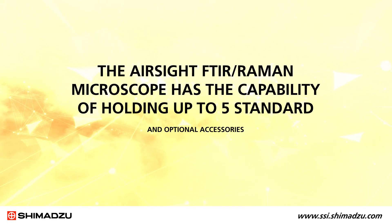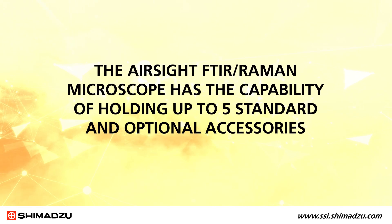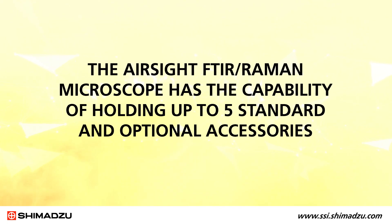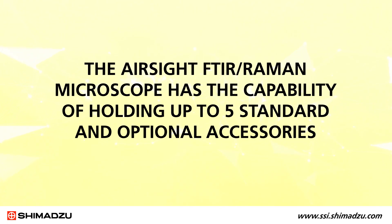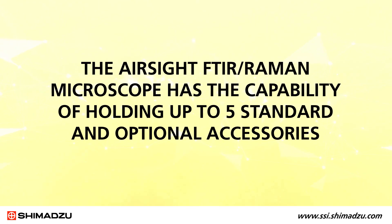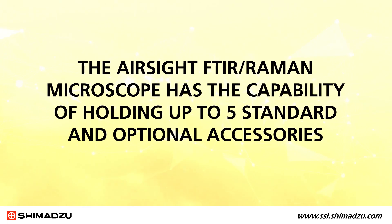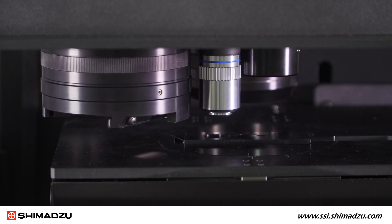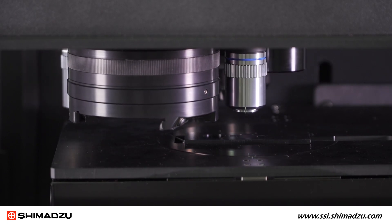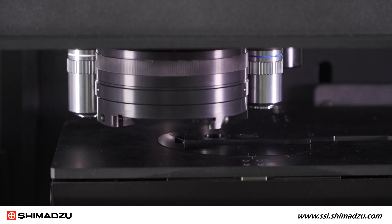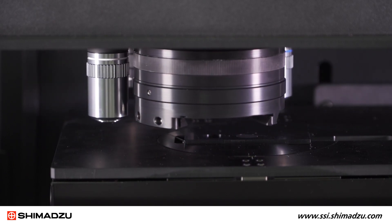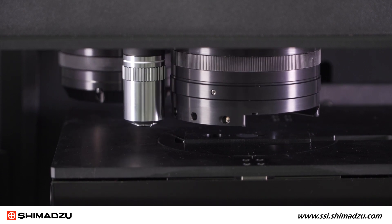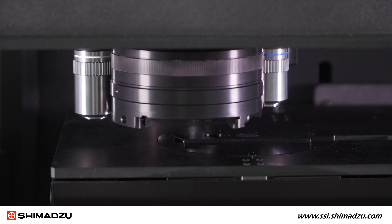The AirSight FTIR Raman microscope has the capability of holding up to five standard and optional accessories. The standard 15x objective is used to take FTIR measurements in the reflectance, transmission, and ATR modes.